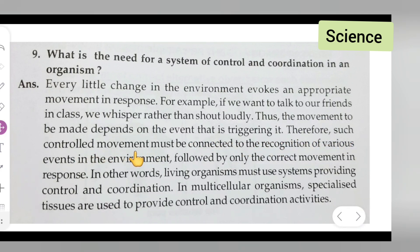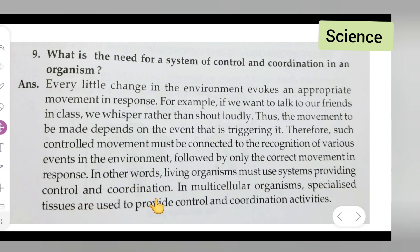Such controlled movement must be connected to the recognition of various events in the environment, followed by only the correct movement in response. In other words, living organisms must use a system providing control and coordination. In multicellular organisms, specialized tissue are used to provide control and coordination activities.